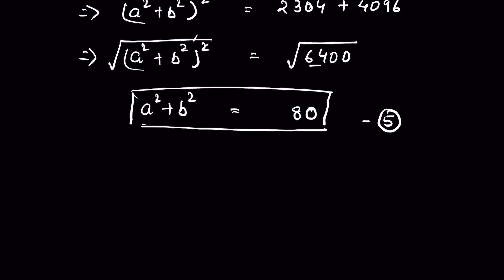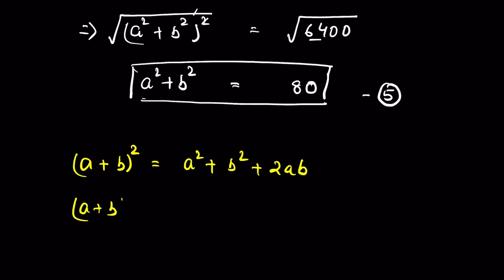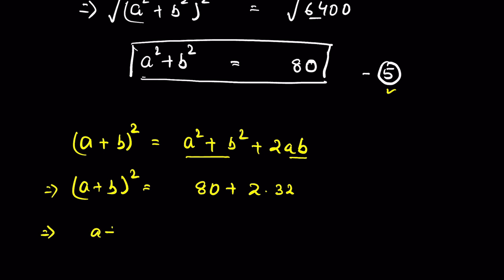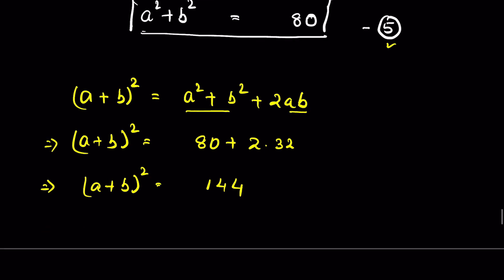Using the identity (a+b)² equals a²+b²+2ab, we substitute a²+b² from equation 5 as 80, and 2ab equals 2 times 32 equals 64. So (a+b)² equals 80 plus 64 equals 144. Taking the square root of both sides gives a+b equals plus or minus 12.